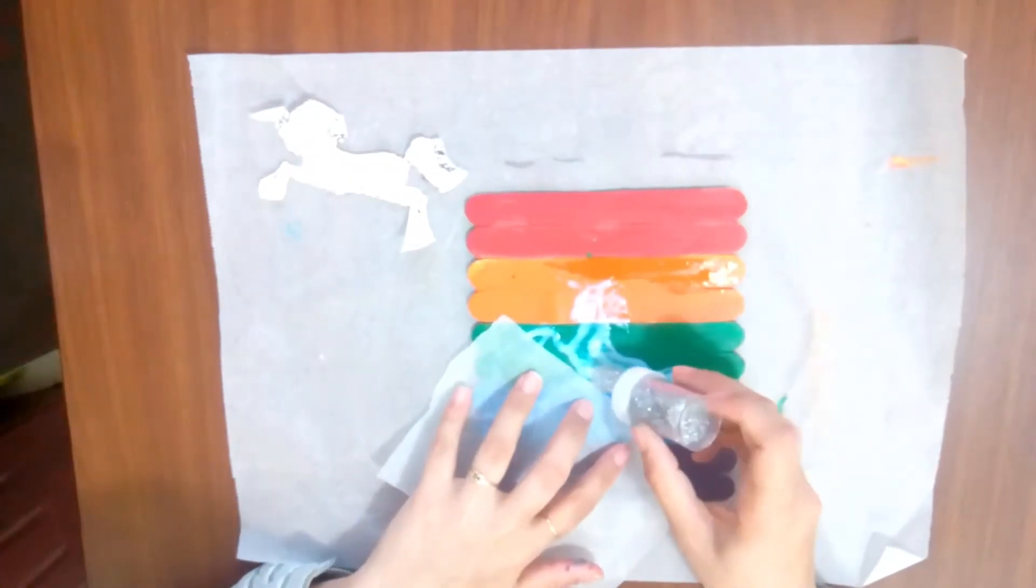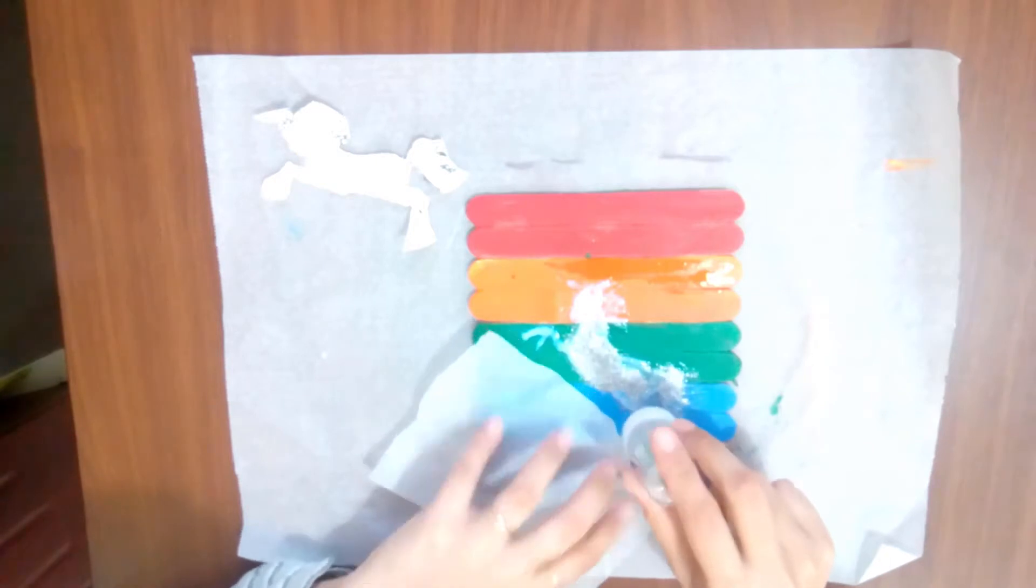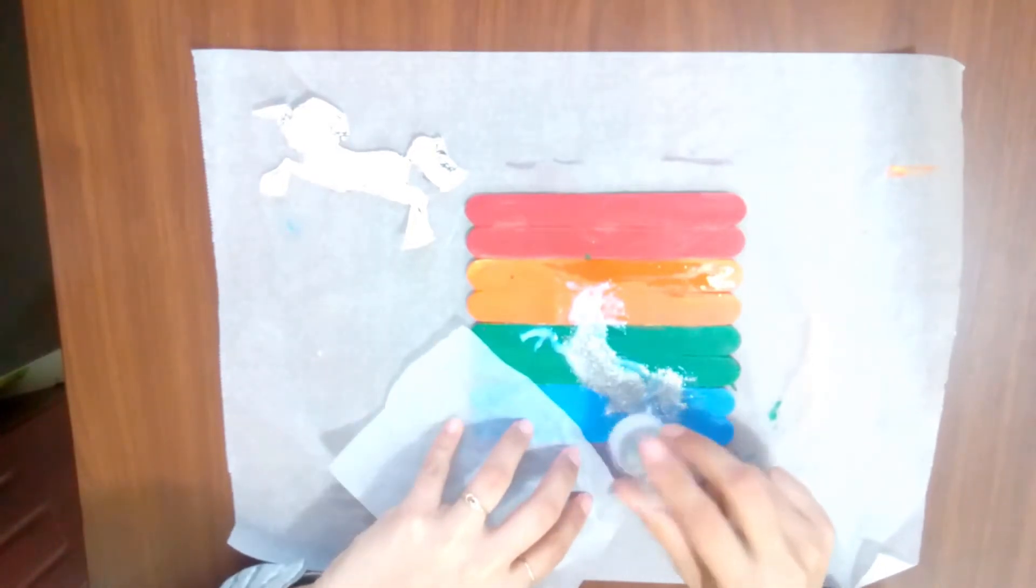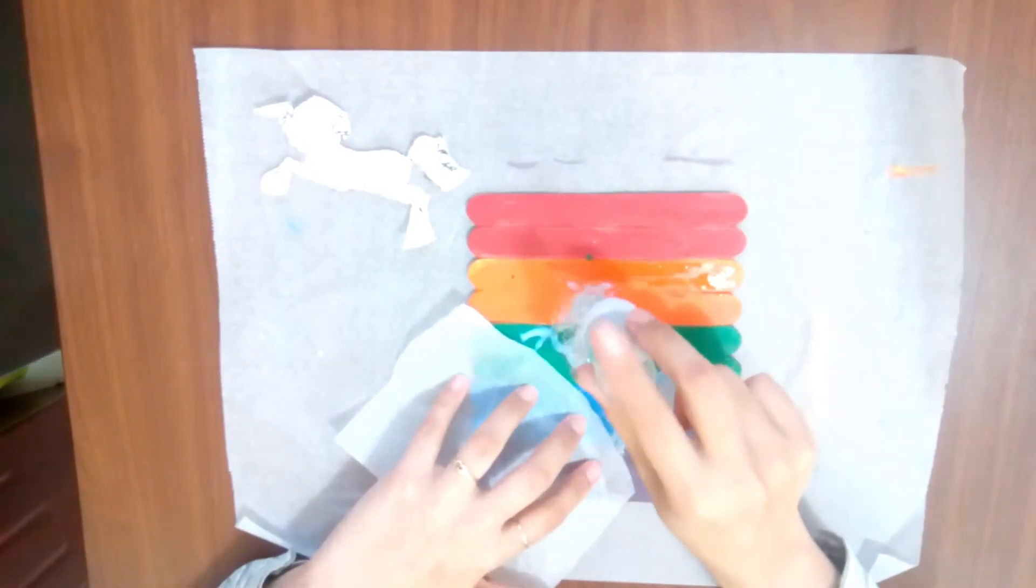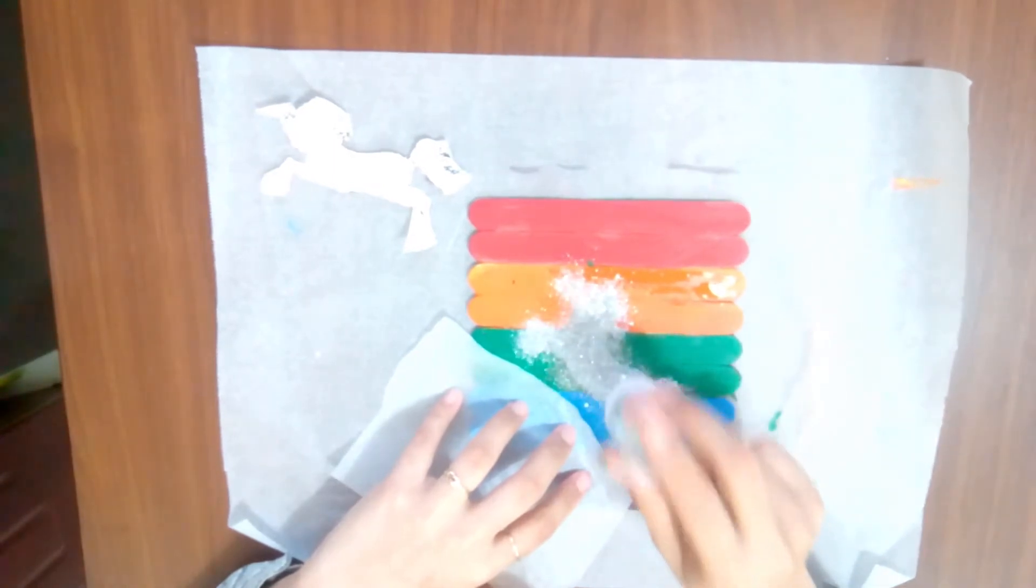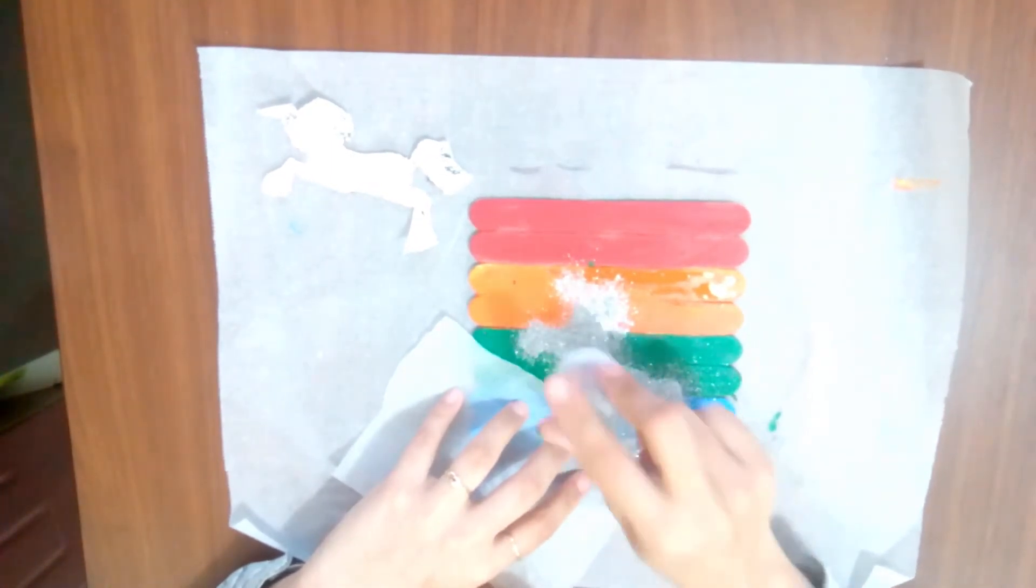I am going to apply silver glitter onto the unicorn pattern. I am going to place a paper underneath so that we don't waste any of the glitter.